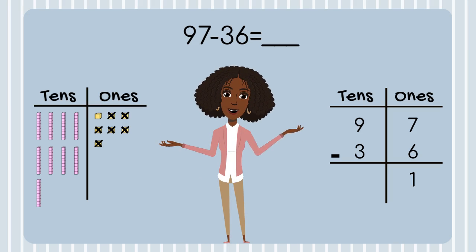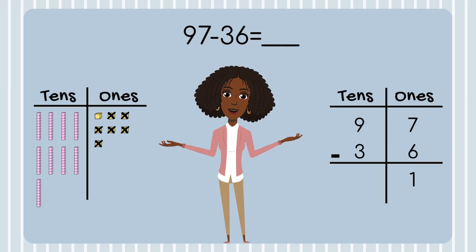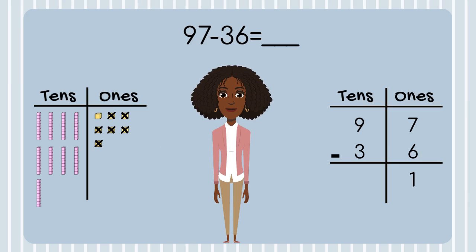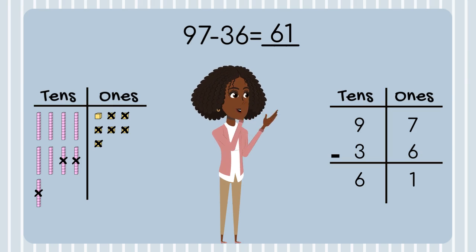You've got this. Now subtract your tens place. What's 9 minus 3? Awesome! Can you tell me what 97 minus 36 is? Amazing job! You did awesome subtracting two-digit numbers today!